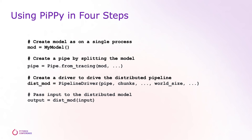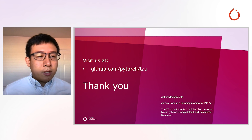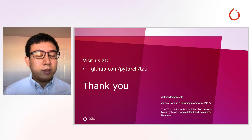To summarize, a user can use PIPI in four simple steps. First, the user can create a model as usual, as if it's on a single process. Then, you can create a pipeline by splitting the model using PIPI's FromTracing API. Next, you can create a pipeline driver, and what the driver returns will already be a distributed model. And last, you can pass the distributed model with input as if you're doing single process training. That's all for my talk. Please come visit us at github.com/pytorch/tau. Thank you.